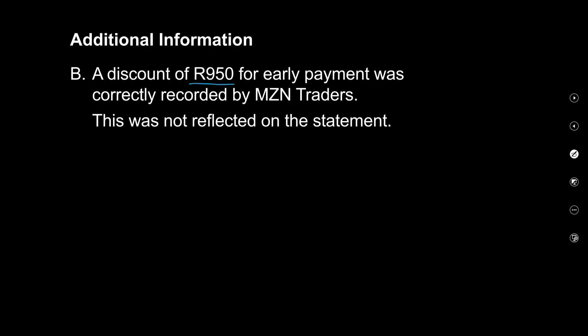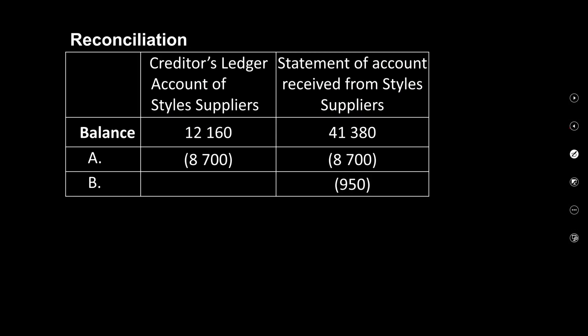Discrepancy one: A payment of 8,700 by MZN traders was not recorded in the creditor's ledger and does not appear on the statement either — left out in both places. We correct this by subtracting 8,700 from both our records and the statement. Discrepancy two: A discount of 950 for an early payment was correctly recorded by MZN traders but not reflected in the statement. We subtract 950 from the statement only.